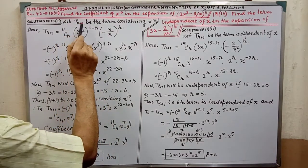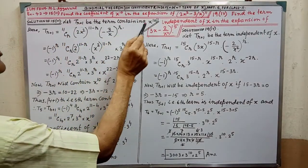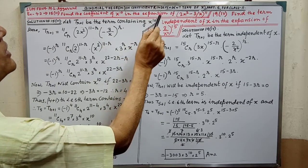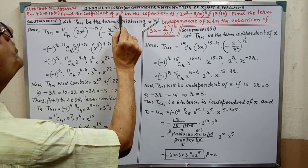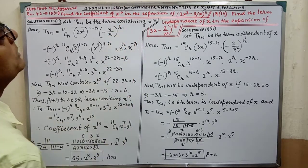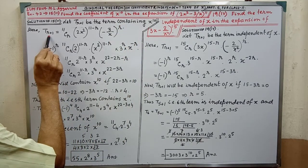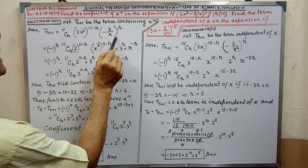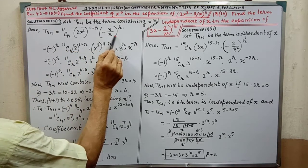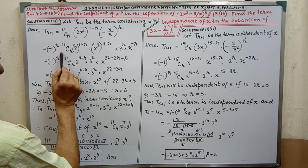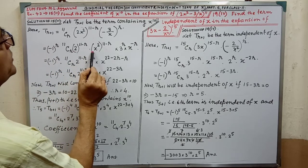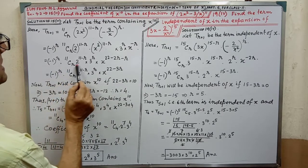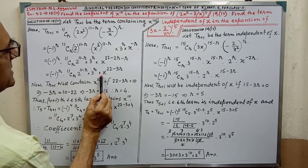Let T(R+1) be the term containing x to the power 10. We have to find out the coefficient of x to the power 10. T(R+1) equal to — by applying the formula, we are getting this expression. Then, putting relevant values and simplifying, by simplifying we are getting this.